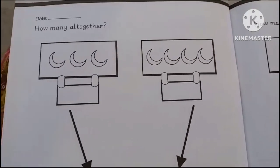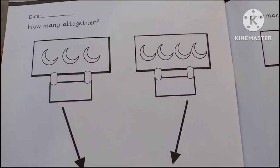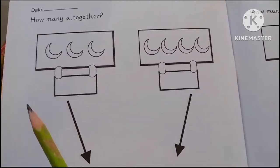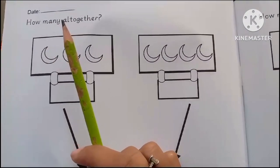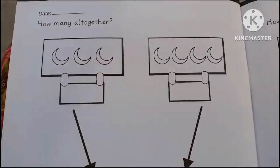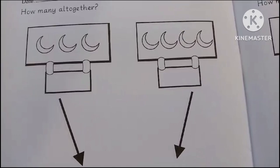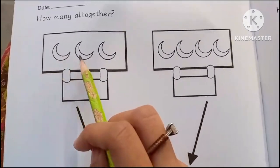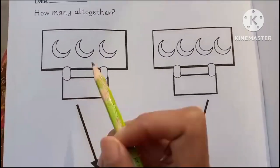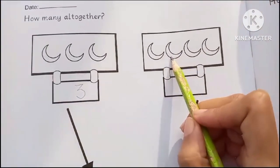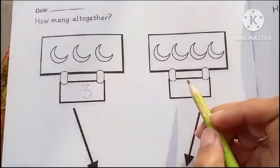Hello everyone, today we are going to learn about the numbers which is altogether. Together, how many altogether? Let's count them. First, one, two, three, there are three moons. One, two, three, four, and there are four moons.